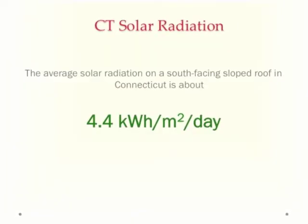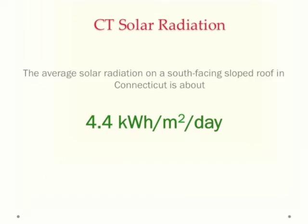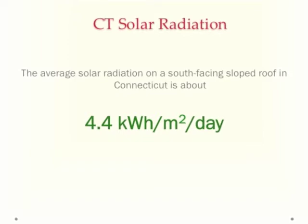The quantitative measure of solar radiation in Connecticut on a south-facing, tilted roof is about 4.4 kilowatt hours per meter squared per day. So every square meter, which is about 10 square feet, gets 4.4 kilowatt hours of electricity every day on average.